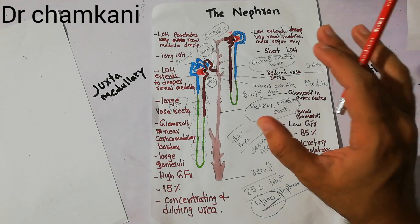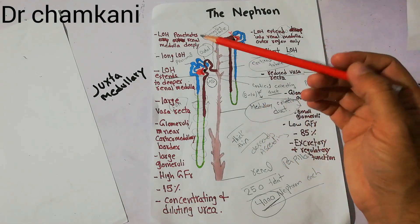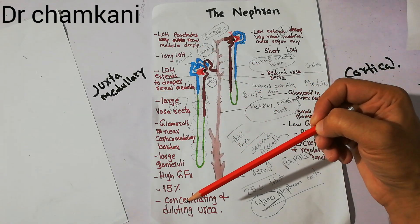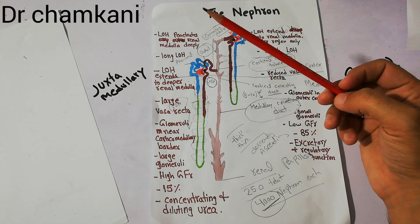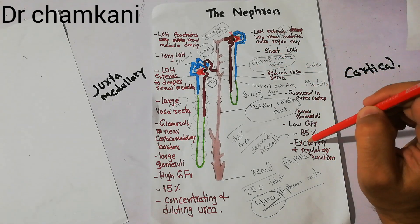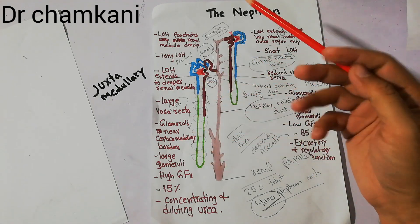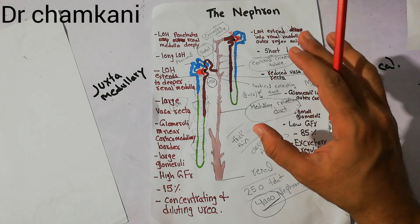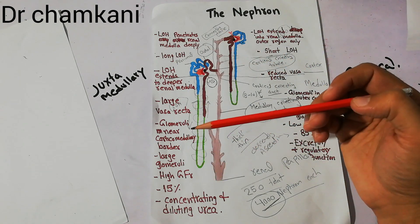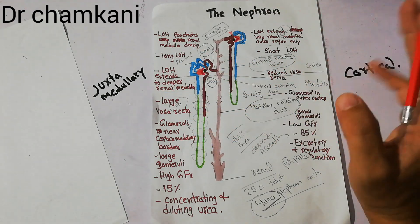The function of these nephrons is also slightly different. Both nephrons perform normal functions, but one notable difference is that juxtamedullary nephrons play an important role in the concentration of urine, and that role is played with the help of the vasa recta. Cortical nephrons play an important role in excretory and regulatory functions. The juxtamedullary nephrons have the ability to concentrate the urine, and if they do not concentrate, the urine will be dilute. How these nephrons concentrate urine is an important topic to be discussed at a later time.